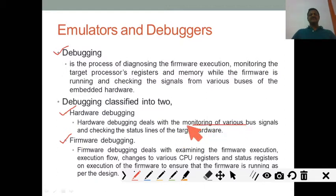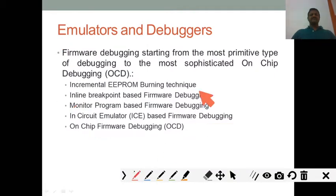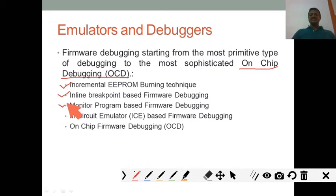For firmware debugging, we can observe register content, memory content, CPU register content, flag bits, and changes in flow control using a debugger. Next, we can use on-chip debugging. The types of debugging techniques you can use on target include: incremental EPROM burning technique, in-line breakpoint system, monitor-based program, in-circuit monitor, and on-chip firmware debugging.